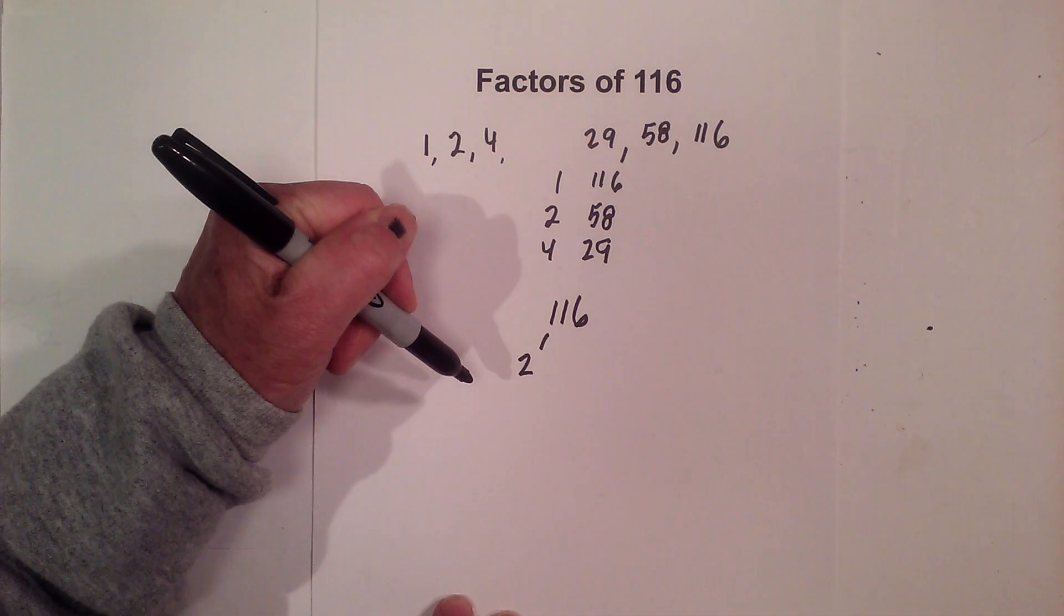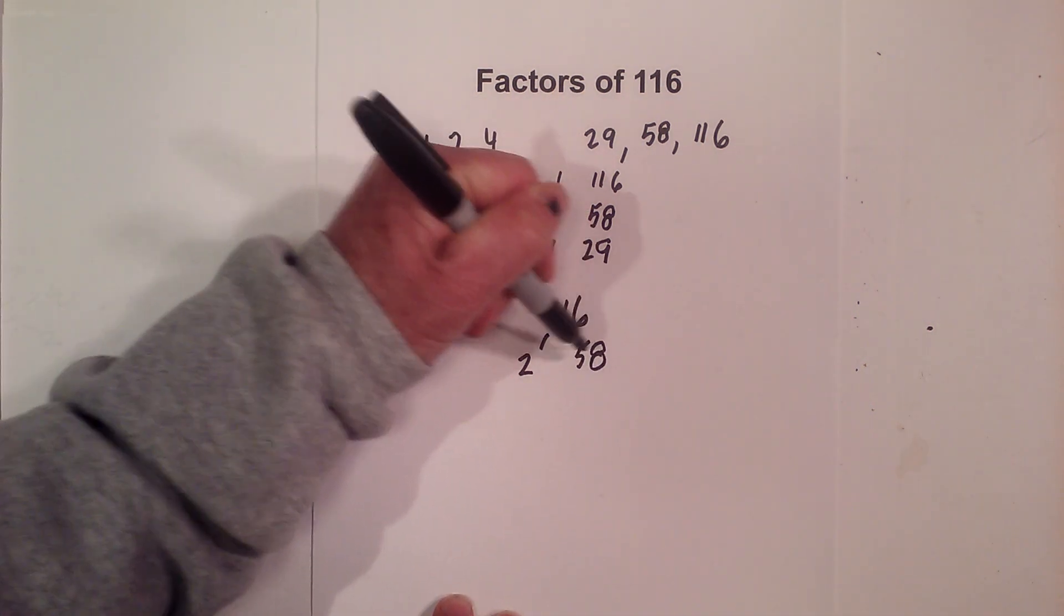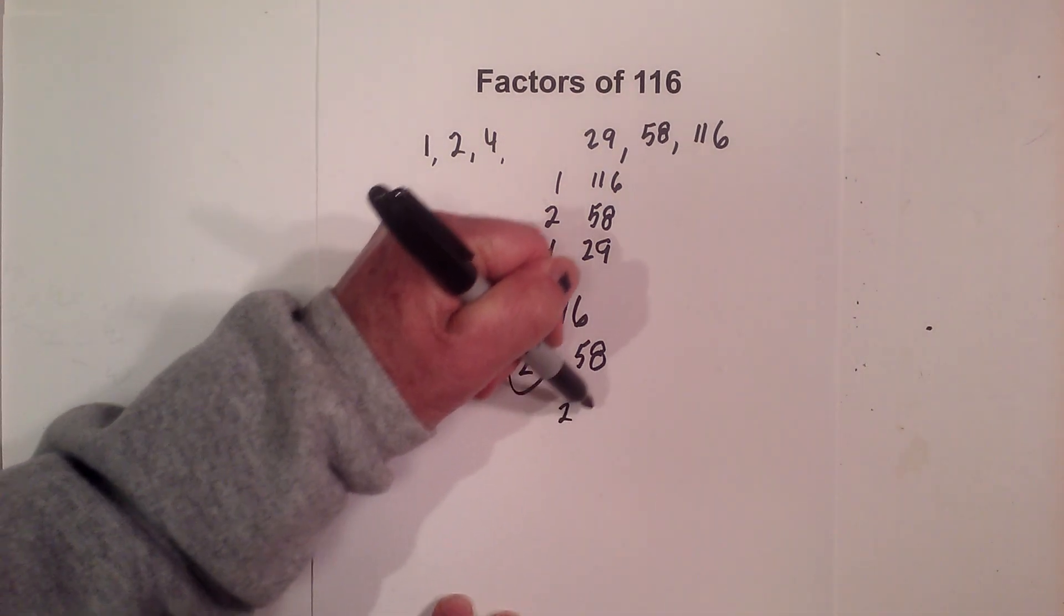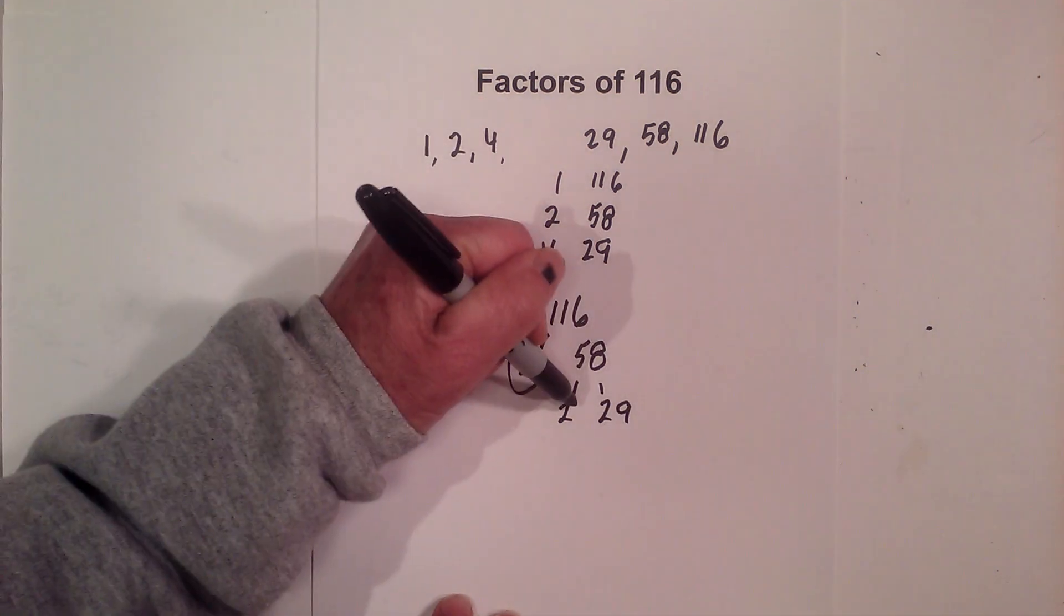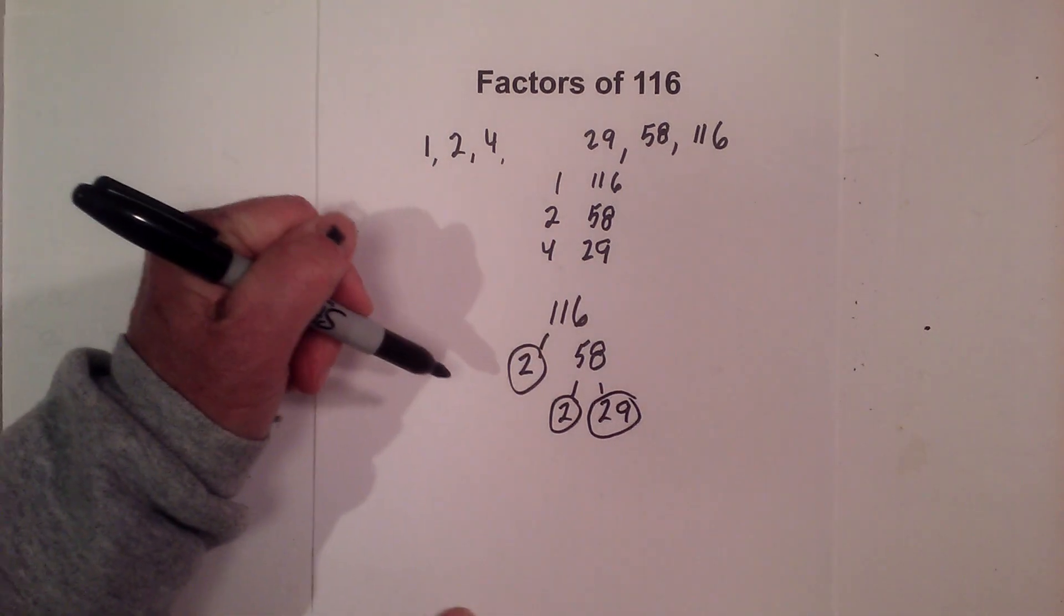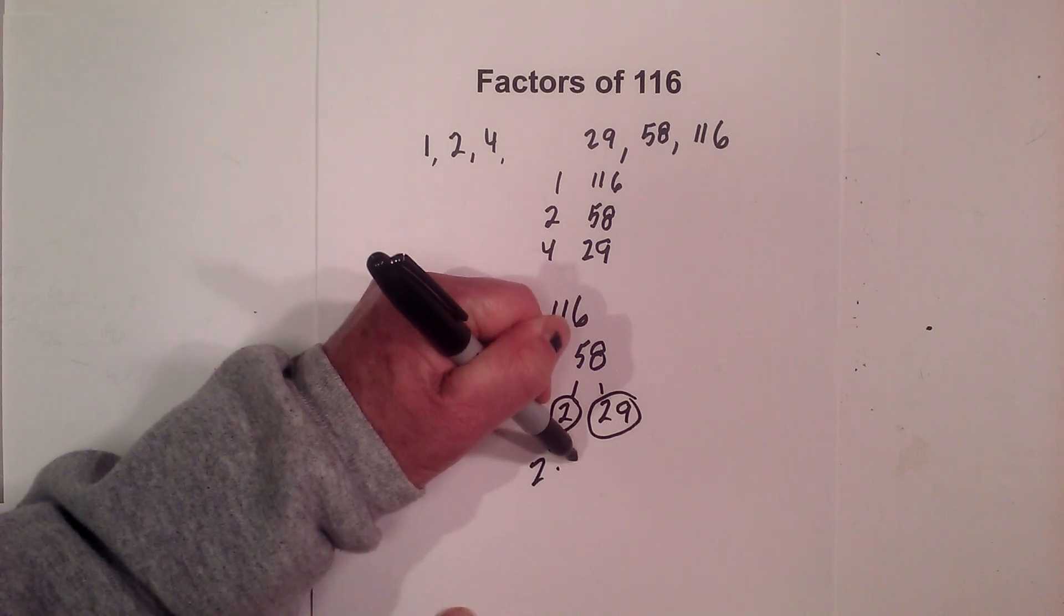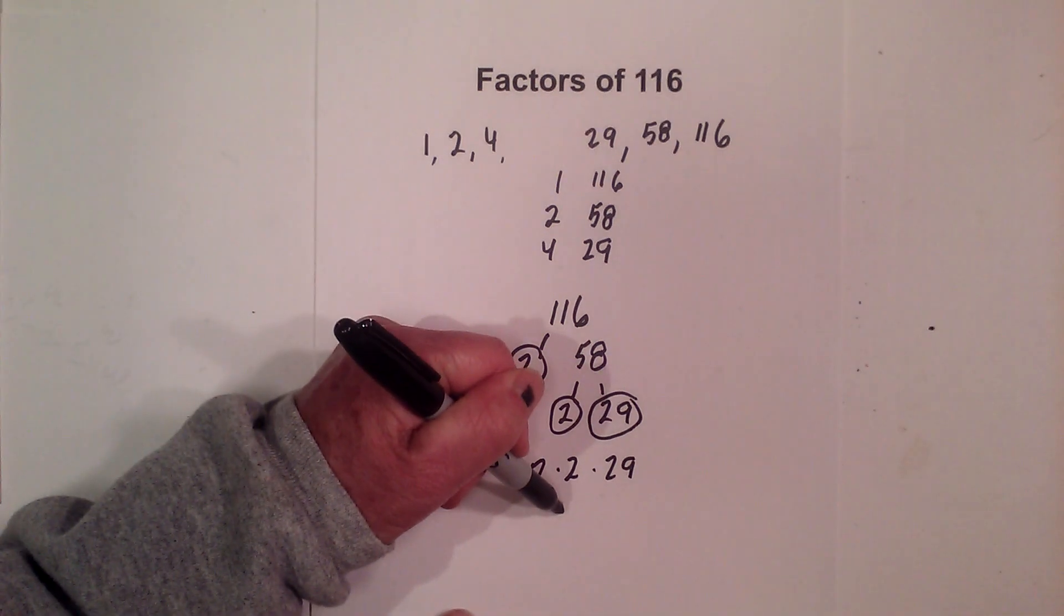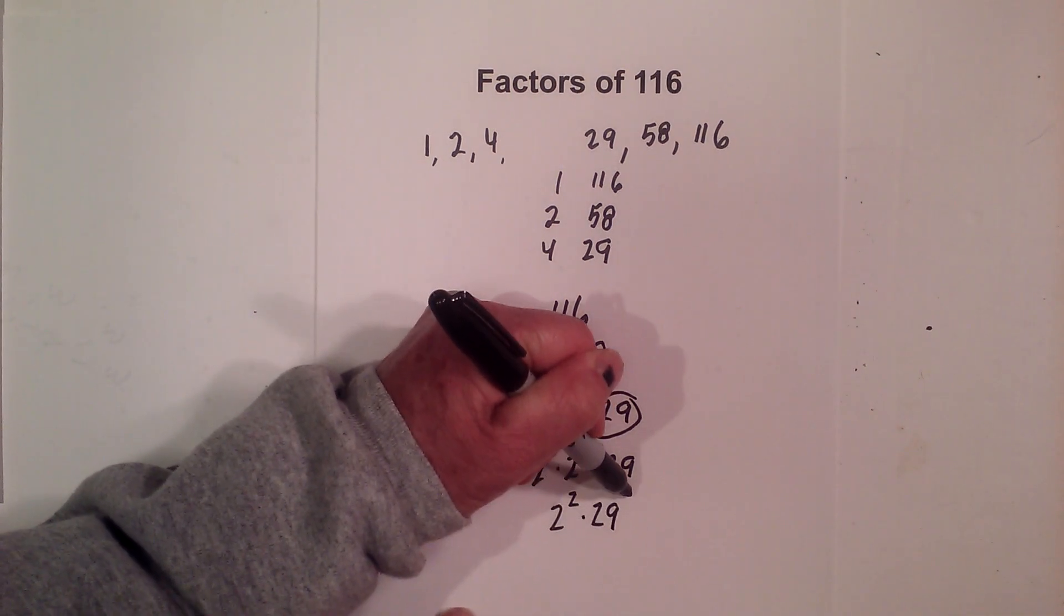We'll start with 116. 2 goes into 116 58 times. Circle the 2 because it is prime. And then 2 times 29 equals 58. Circle both of them because they are both prime. So the prime factorization of 116 is 2 times 2 times 29, and you can rewrite that 2 squared times 29 to the first.